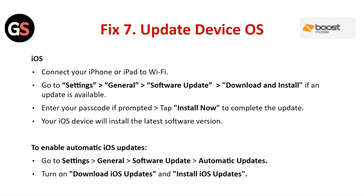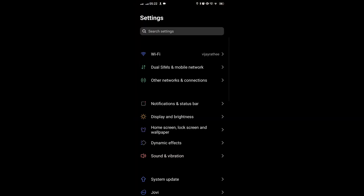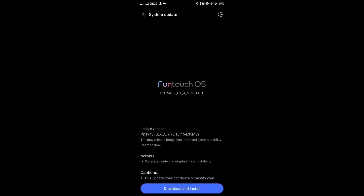Fix 7: Update the device. For iOS, connect your iPhone or iPad to Wi-Fi, go to Settings, then General, then Software Update. Download and install any available update, enter your passcode if prompted, and tap Install Now to complete the update. To enable automatic iOS updates, go to Settings, General, Software Update, then Automatic Updates, and turn on Download iOS Updates and Install iOS Updates. For Android, connect to Wi-Fi, open Settings, and tap About Phone, then Check for Updates. If an update is available, tap Install — your Android device will reboot and install the update.